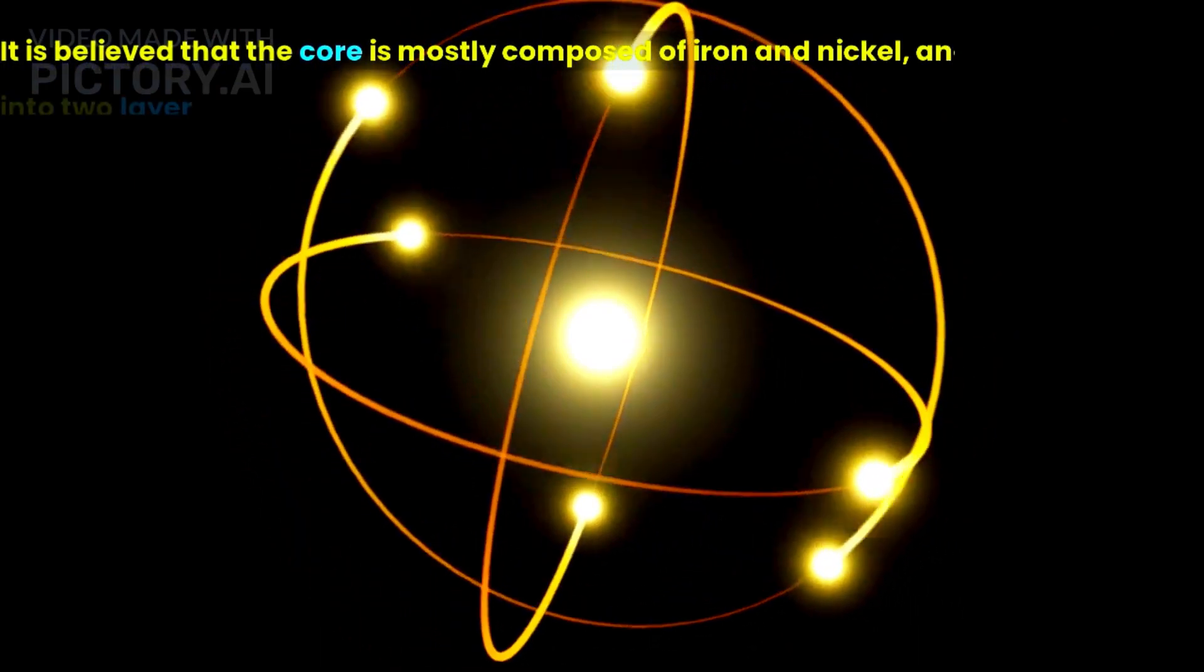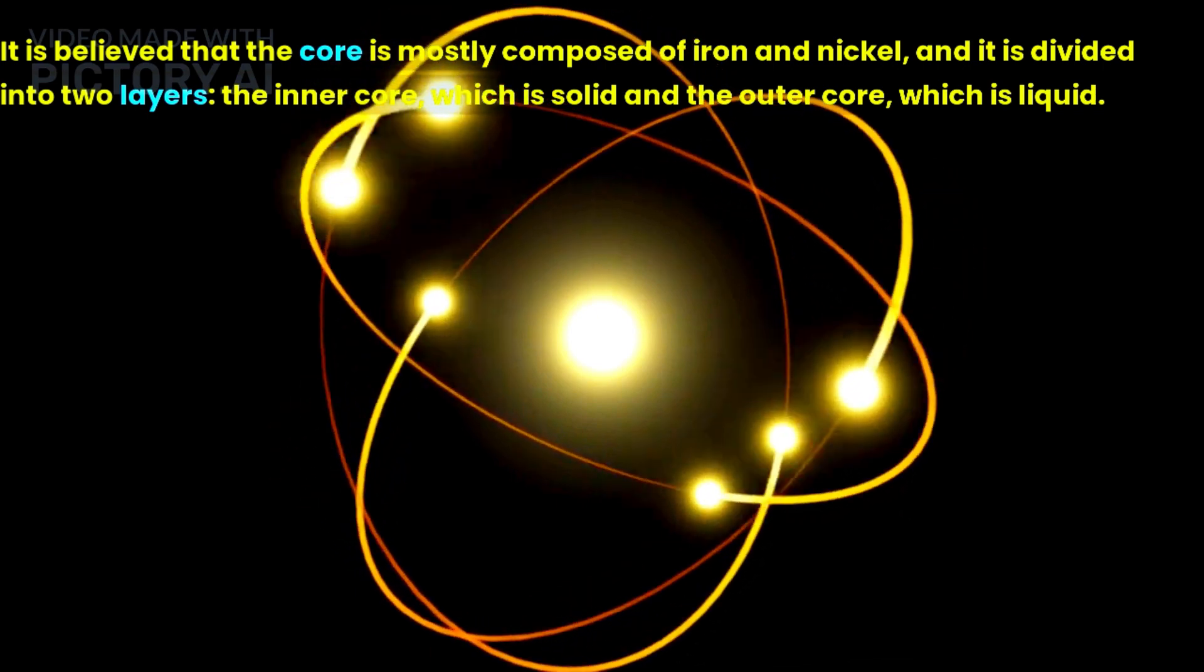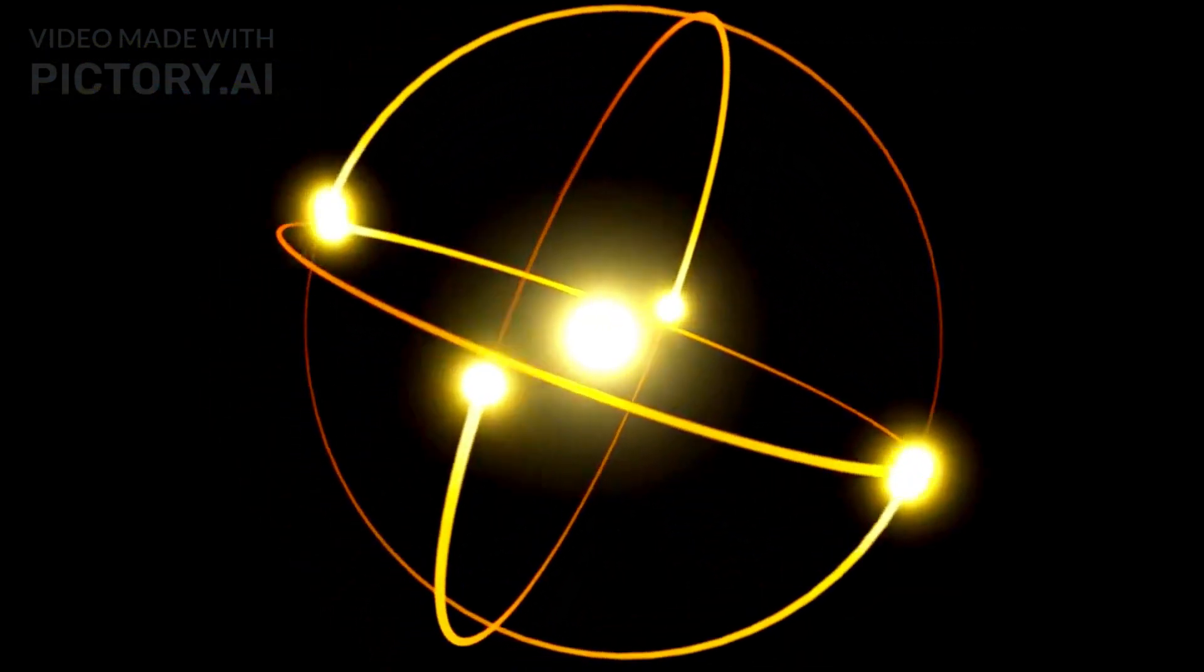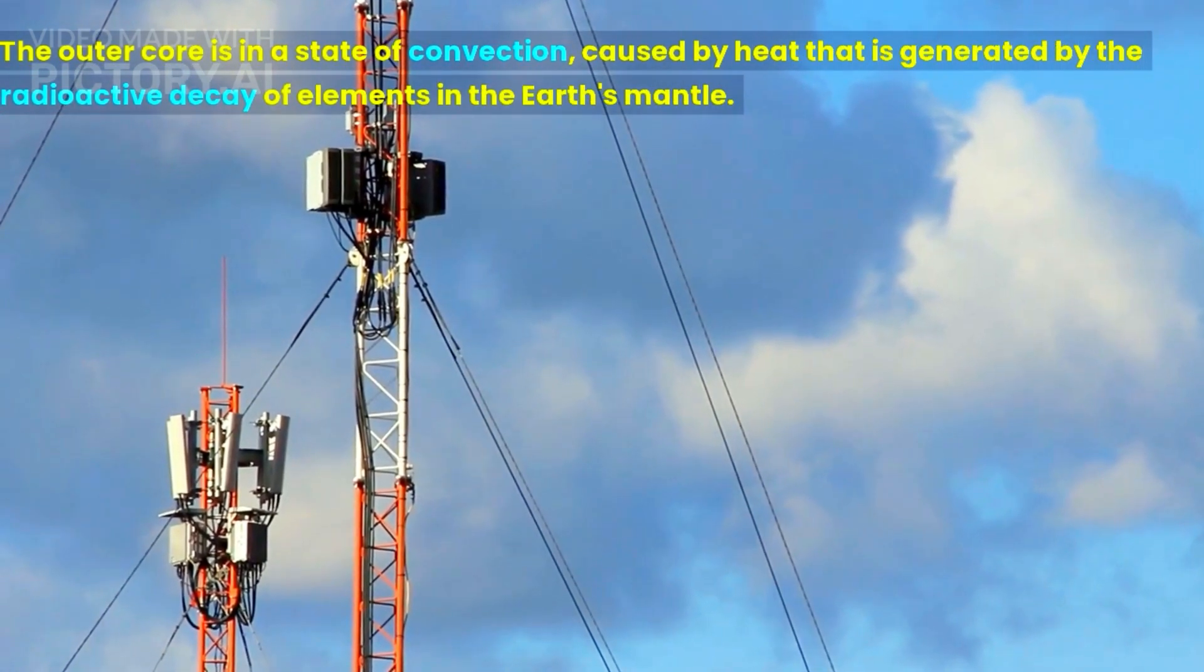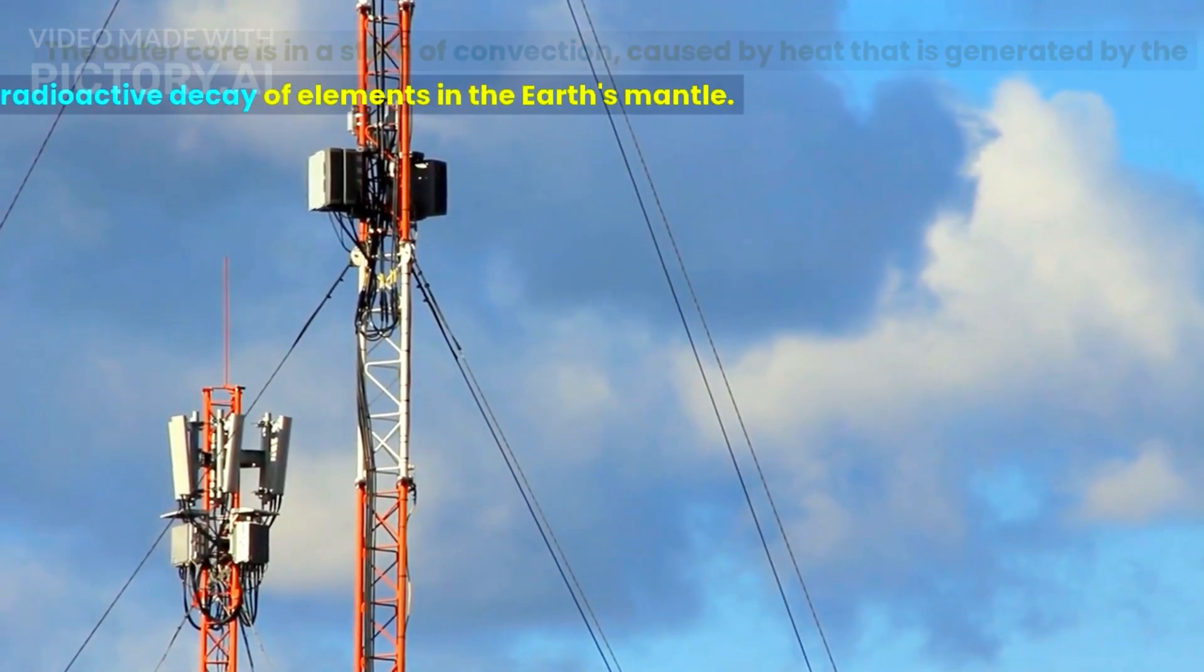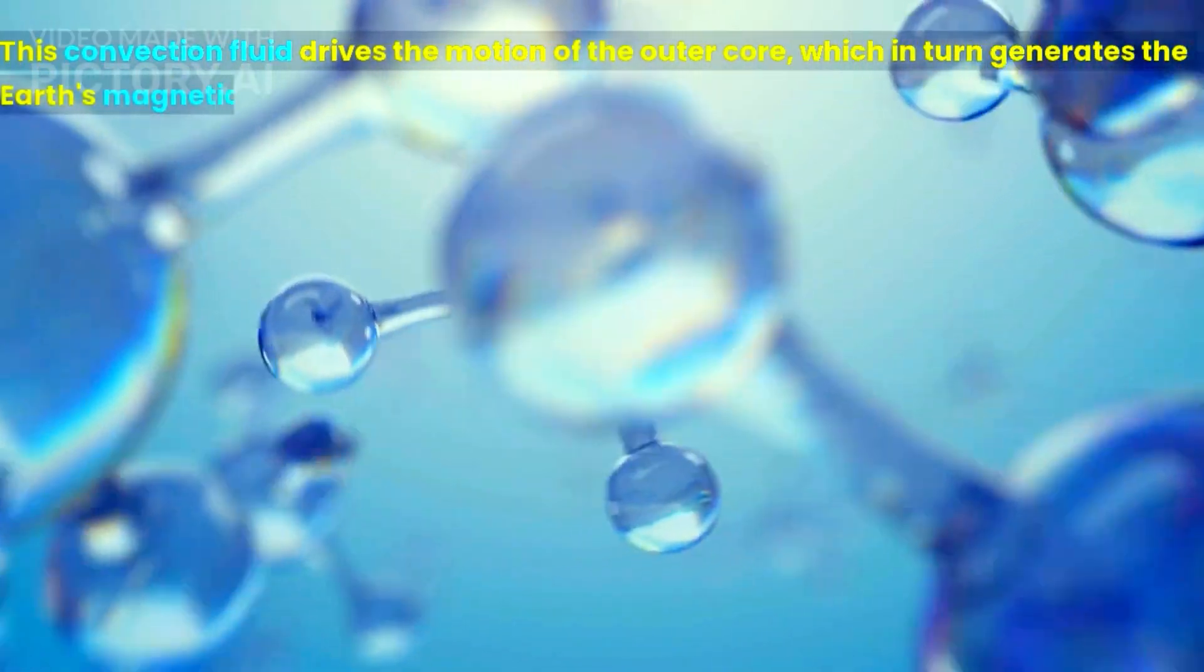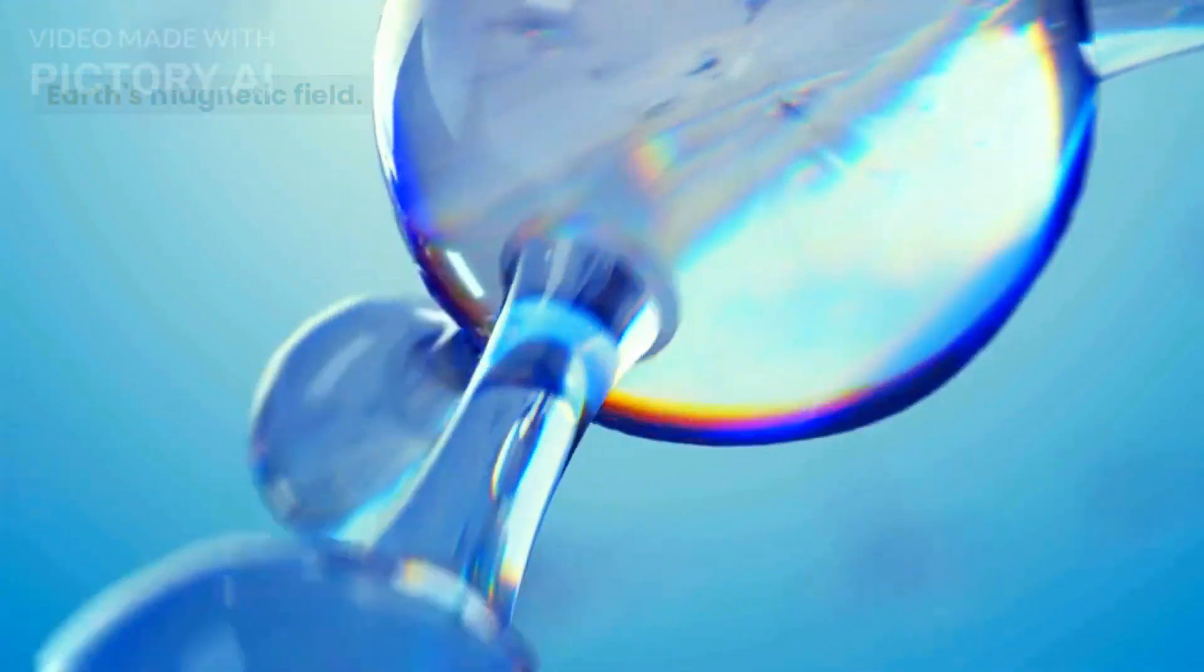It is believed that the core is mostly composed of iron and nickel, and it is divided into two layers: the inner core, which is solid, and the outer core, which is liquid. The outer core is in a state of convection, caused by heat that is generated by the radioactive decay of elements in the Earth's mantle. This convection fluid drives the motion of the outer core, which in turn generates the Earth's magnetic field.